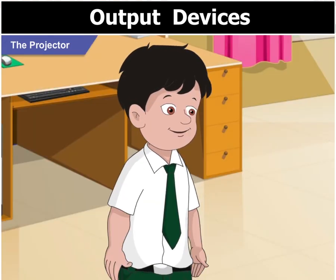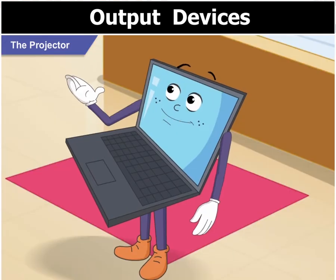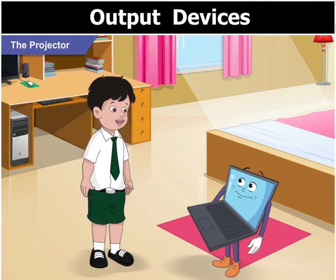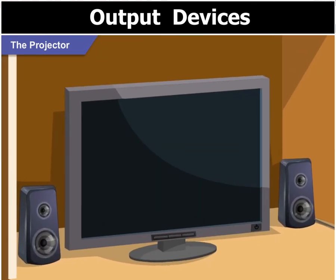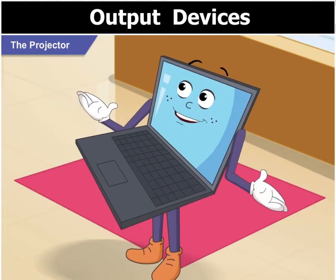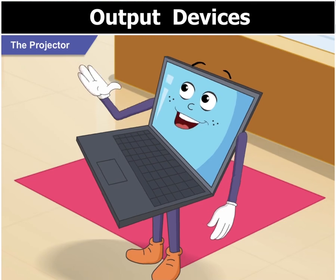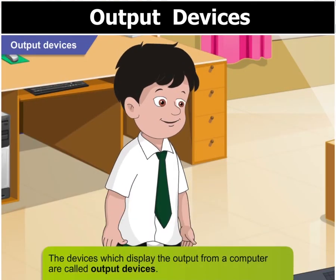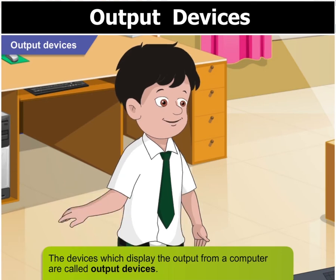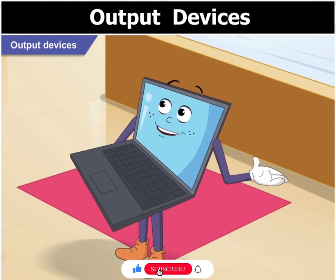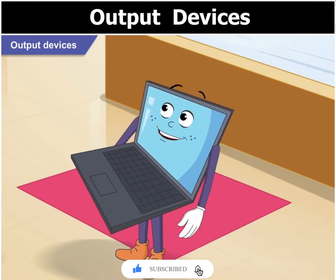Are you sure about the projector being an output device? Yes, a projector is indeed an output device. Why do you look so confused? I know that the computer monitor is an output device, but how can a projector be an output device? That shouldn't be hard to understand, once you recall what output devices are. The devices through which we see the output from a computer are called output devices. Well done! And that's why the projector is also an output device.